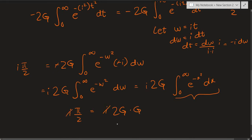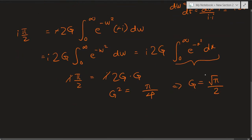That integral from 0 to infinity of e raised to negative x squared dx is just our Gaussian integral g again. So we have i pi over 2 equals i times 2g times g. The i's cancel, giving g squared equals pi over 4. Therefore g equals square root of pi over 2. It's a beautiful result — pi comes out of nowhere even though we had no trigonometric functions. That's yet another way of evaluating the Gaussian integral.